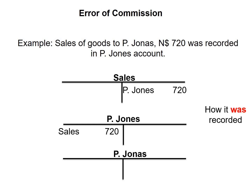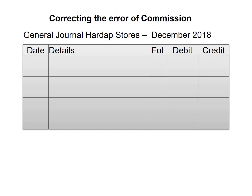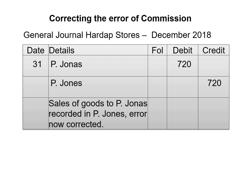Let's have a look at how we would go about correcting this in our general journal. We need to write the date as 31. We will start by entering our date, then enter the account to be debited first — in this case it will be P. Jonas — and then the account to be credited would be P. Jones, because we need to rectify our error. And then finally, our narration: sale of goods to P. Jonas recorded in P. Jones — error now corrected.